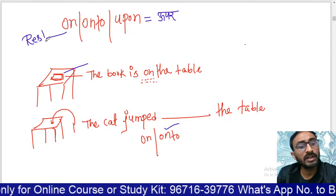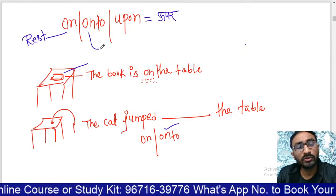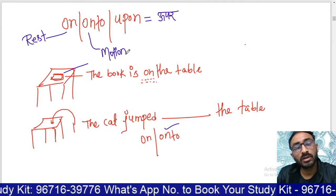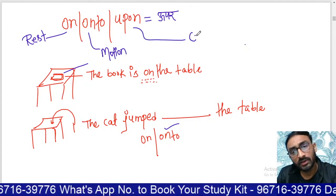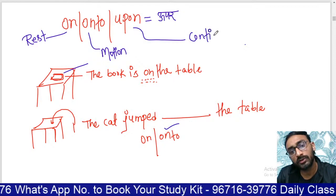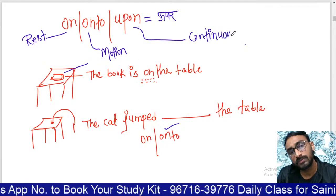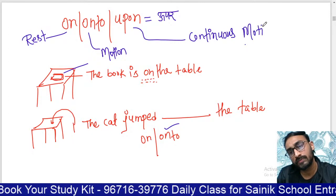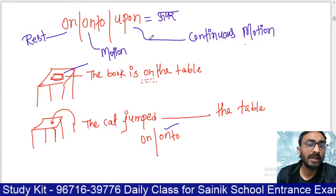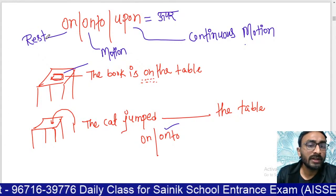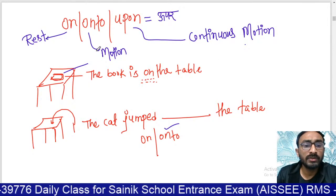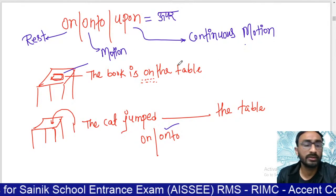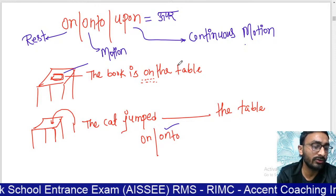The answer is 'onto.' The book already on the table has no motion — that uses 'on.' 'On' means at rest; 'onto' is used when something is in motion; and 'upon' is used when something is in continuous motion.